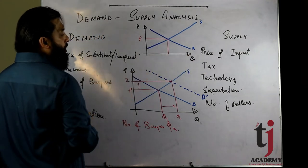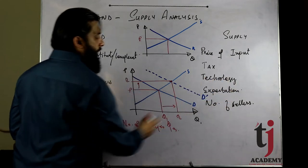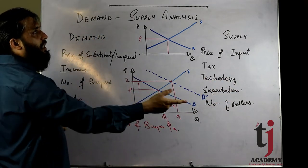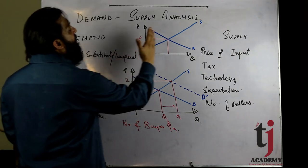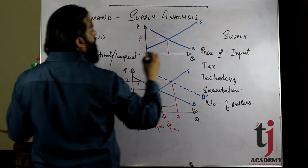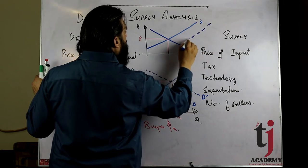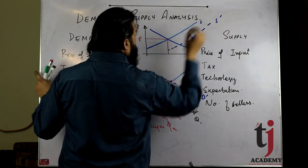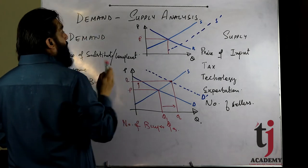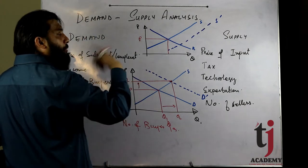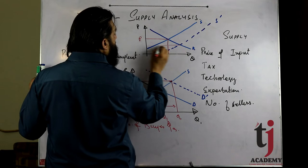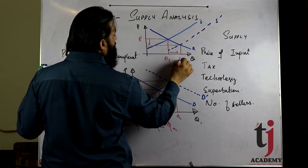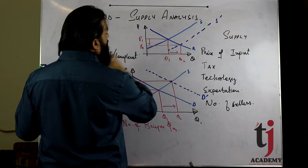Case 2: Number of Sellers बढ़ गए। Number of Sellers बढ़ने का मतलब है market में product ज्यादा आ गए — supply बढ़ जाएगी। Supply का rightward shift होगा क्योंकि quantity X-axis पर है। Number of Sellers के बढ़ने का market पर effect: Equilibrium Price कम हो गई (P1 से P0) और Equilibrium Quantity में इजाफा हो गया (Q1 से Q2)।